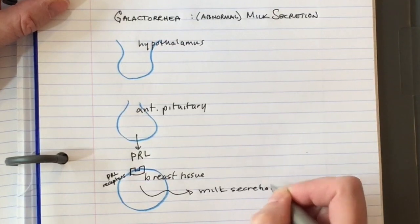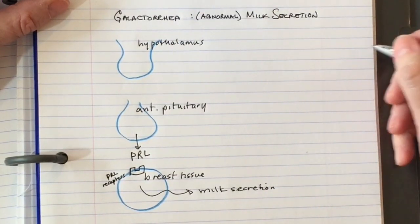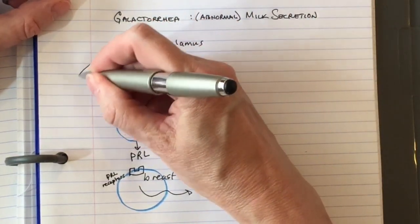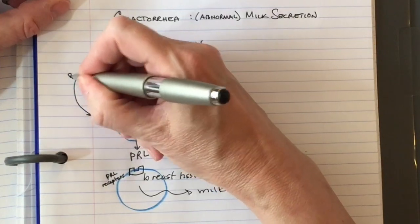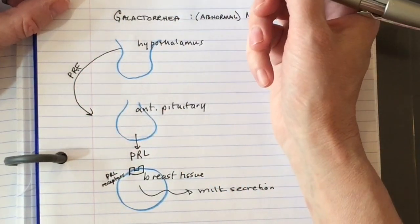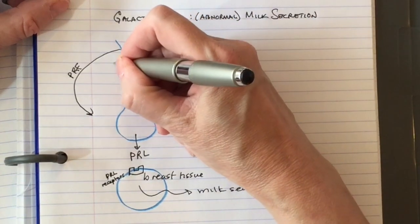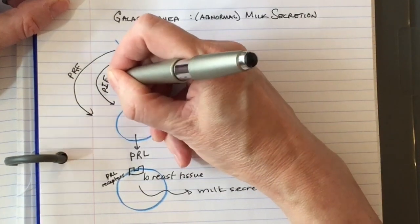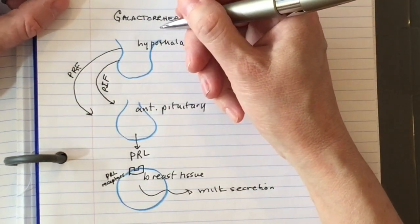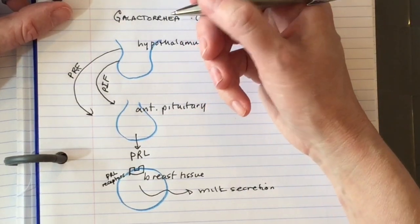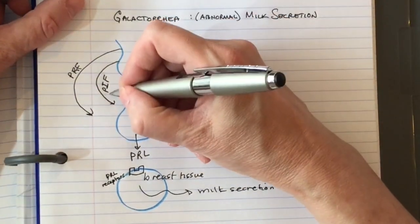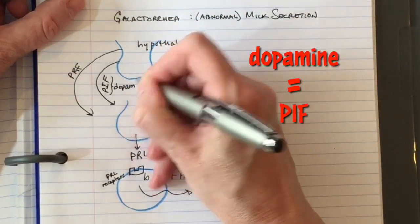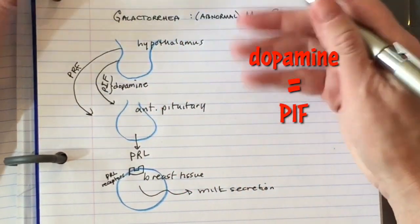This is the normal situation. The hypothalamus secretes two things. It secretes something called prolactin releasing factor, and another thing called prolactin inhibitory factor. Prolactin inhibitory factor is just dopamine, just the molecule dopamine.